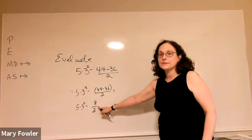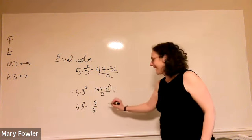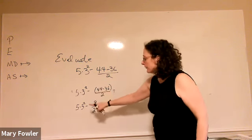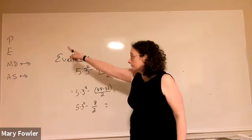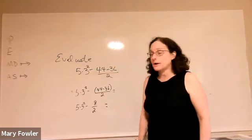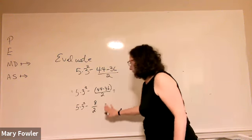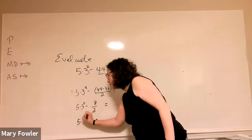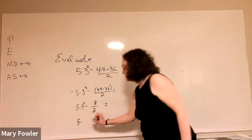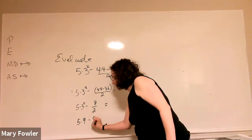And remember now that this fraction bar is a division sign and a parentheses. So going from looking at the order of operations, we see we have an exponent, so let's go ahead and evaluate three squared. Three times three squared - and three times three is nine - minus eight over two.